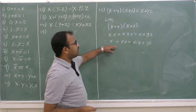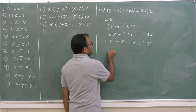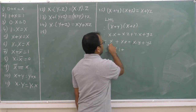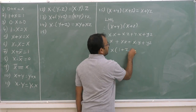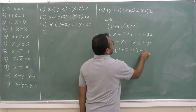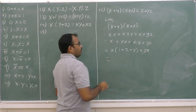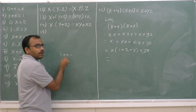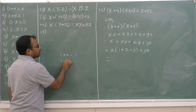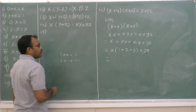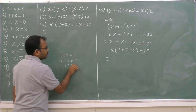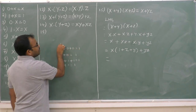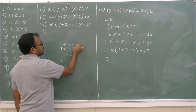Now, in these three terms, x is the common element. So I will take x out as common, and the remaining is 1 plus z plus y plus yz. Now observe here very carefully: 1 plus 0 is 1 itself; 1 plus 1 is 1 itself; 1 plus 1 plus 1 is equal to 1; 1 plus 0 plus 0 is equal to 1; 1 plus 1 plus 1 plus 0 is equal to 1.